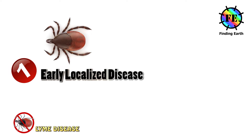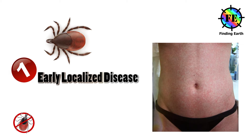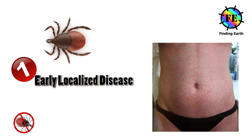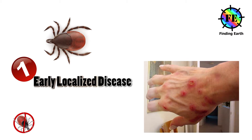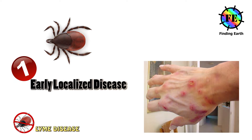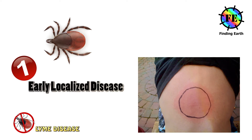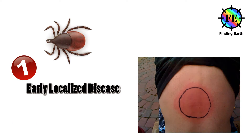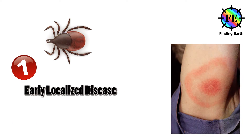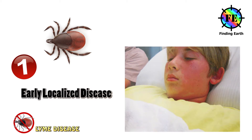Stage 1: Early Localized Disease. From 3 to 30 days after an infected tick bite, an expanding red area might appear that sometimes clears in the center, forming a bullseye pattern. The rash — erythema migrans — expands slowly over days and can spread to 12 inches across. It is typically not itchy nor painful.